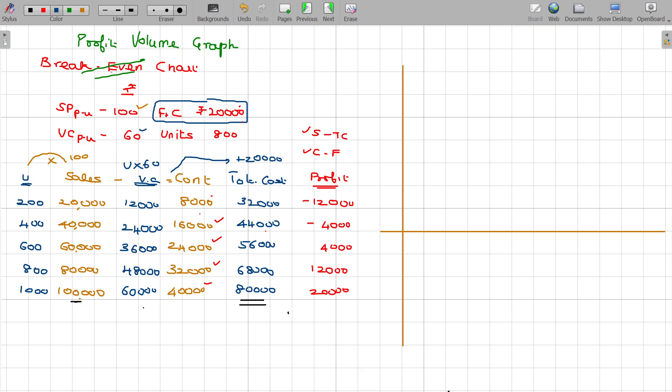Let us see here, 200 units, 400 units, 600 units, 800 units, 1000 units, X axis the units, origin.